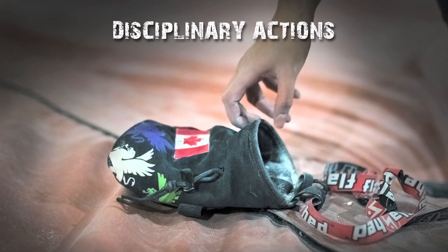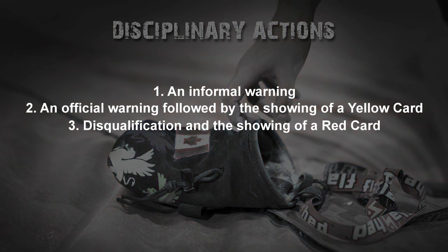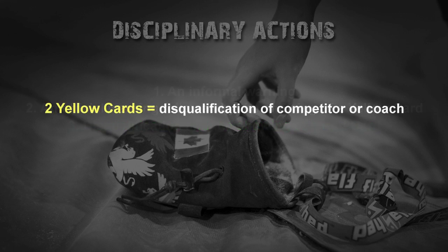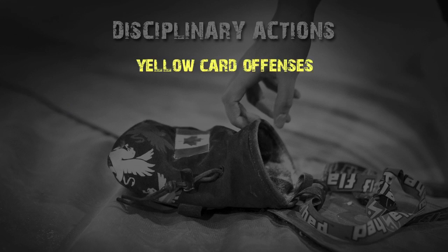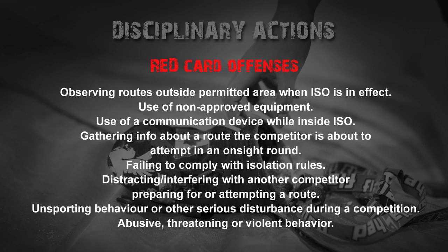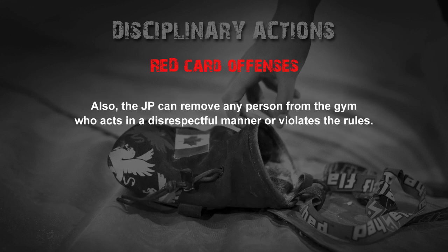The jury president may take one of the following actions in respect to the infringements of competition rules by a competitor or coach: one, an informal warning; two, an official warning followed by the showing of a yellow card; three, disqualification and the showing of a red card. The issue of two yellow cards at the same event will result in the disqualification of the competitor or coach from that competition. Yellow card offenses and red card offenses are defined in the rulebook. Additionally, the jury president can remove any person from the gym who acts in a disrespectful manner or violates the rules.